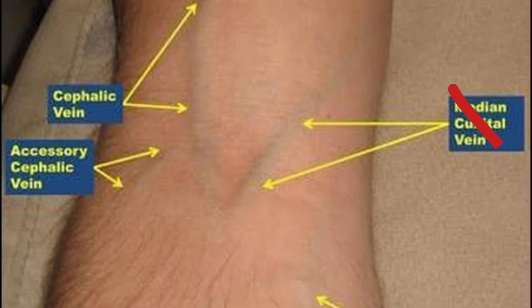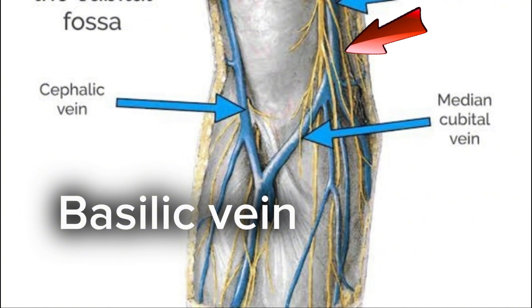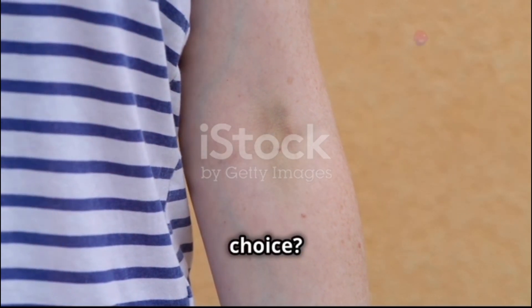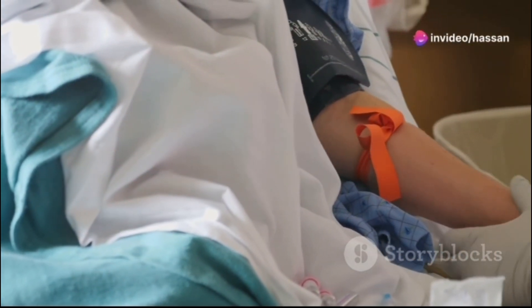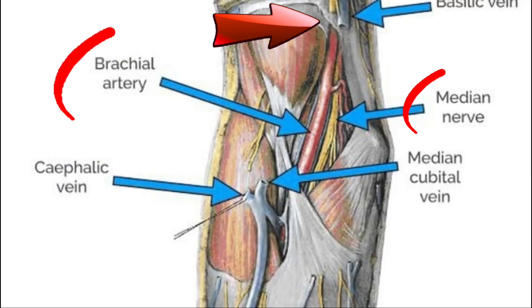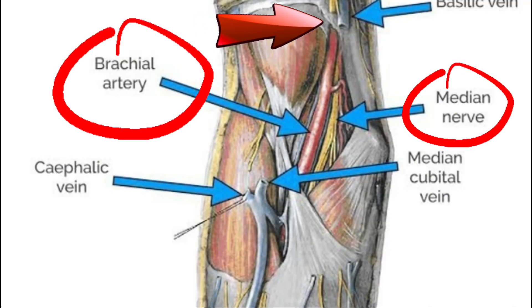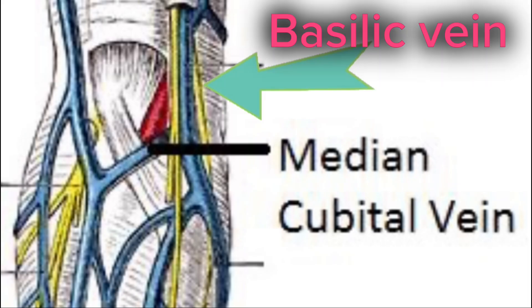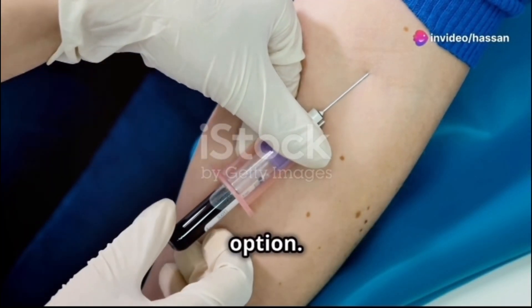Now if neither the median cubital nor the cephalic veins are suitable, which vein do we turn to next? The basilic vein — it is on the medial side of the arm towards the pinky. While it can be a good option, why is it generally our last choice? It's less well-anchored and closer to arteries and nerves, which increases the risk of complications. It's less stable and more prone to movement, and the proximity to the brachial artery and the median nerve makes it a higher risk option.